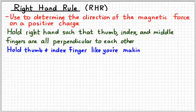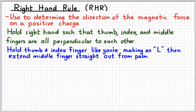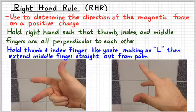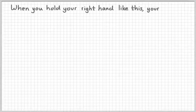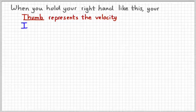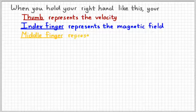Point your thumb and index finger like you're going to make an L, and then extend your middle finger straight out from the palm of your hand — just uncurl it so that it's pointing straight out from your palm. Your hand's going to end up looking something like that. When you hold your hand that way, your fingers represent the three vectors involved. Your thumb represents the velocity of the charge — think of it like hitchhiking, you point your thumb in the direction you're going. Your index finger represents the magnetic field B. And your middle finger represents the magnetic force.